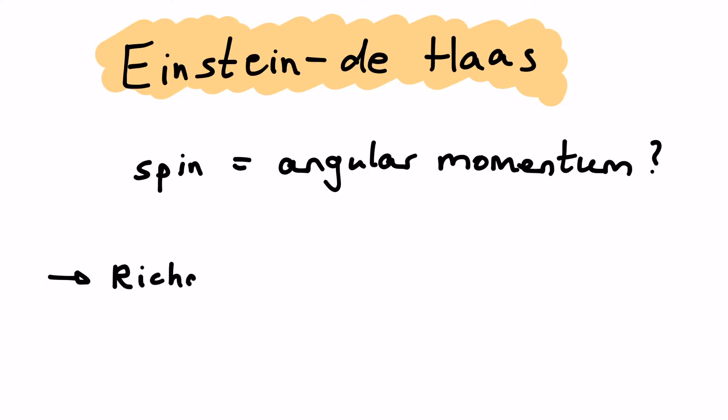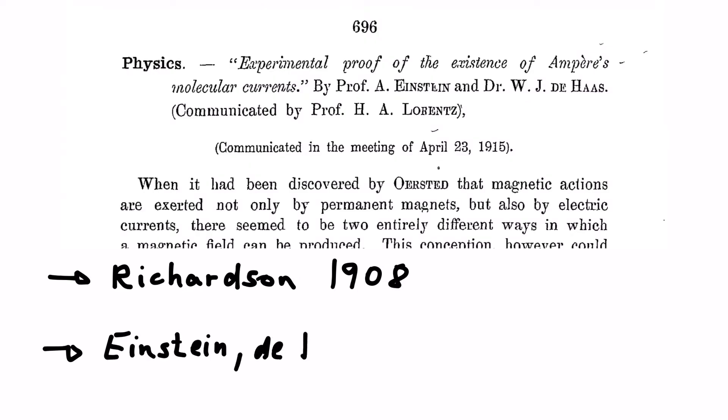What we'll see is that a changing magnetization can cause an object to rotate. The experiment was first thought of by Richardson in 1908 and later performed by Einstein and de Haas in 1915.